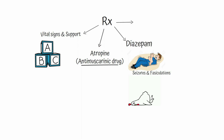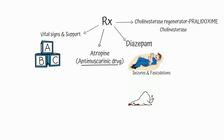The third treatment is a cholinesterase regenerator, pralidoxime, which can regenerate and liberate the cholinesterase enzyme from the organophosphates if given within 72 hours.